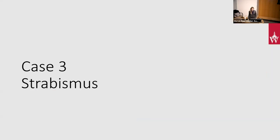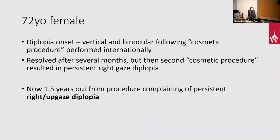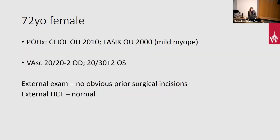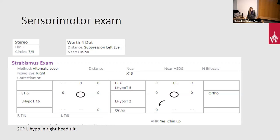Moving to the last case — a 72-year-old female sent by another community pediatric ophthalmologist. She'd had diplopia that began after a cosmetic procedure performed internationally, then surprisingly went back and had a second cosmetic procedure also performed internationally. The diplopia resolved after the first procedure but did not go away after the second. She's now about a year and a half out from her procedures with persistent right upgaze diplopia. Otherwise pretty benign history — cataracts out, LASIK prior to cataract surgery, mild myope, good vision. On external exam there was no obvious scarring; a CT scan showed no hardware.